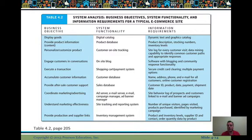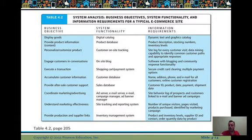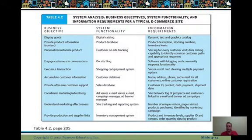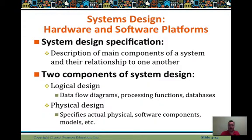This is an interesting chart about business objectives, functionality, and information requirements. For instance, if your business objective is to execute a transaction, your shopping cart and payment system are the functionality you'll need. The information you'll need includes credit cards, secured credit card clearing, and multiple payment options — not just Visa and MasterCard, but potentially PayPal or newer wallet technologies. Alternatively, if you want to display goods as a business objective, you'll need your digital catalog, which will have dynamic text and graphics as the information requirements.